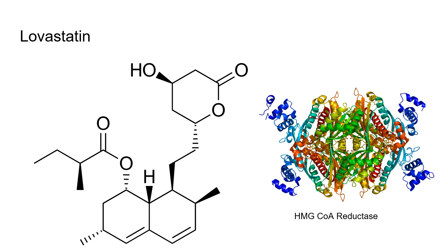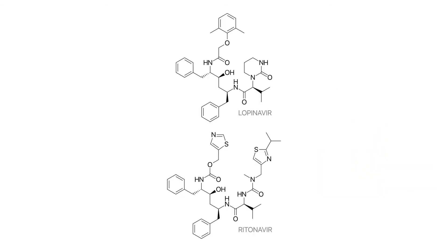Here we see lovastatin, a cholesterol-lowering drug which targets the enzyme HMG coenzyme A reductase, which is important in the transfer of cholesterol. Lovastatin has been thermodynamically optimized to bind to HMG coenzyme A reductase to better optimize the lowering of blood cholesterol. Finally, we have a pair of protease inhibitors, lopinavir and ritonavir, which when used together can treat HIV. The known protease inhibitors have had their thermodynamic parameters measured, with lopinavir having the most thermodynamically favored binding, but when used with ritonavir, is even more powerful.